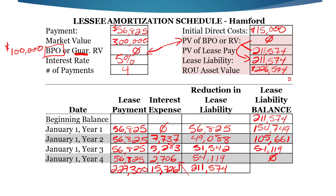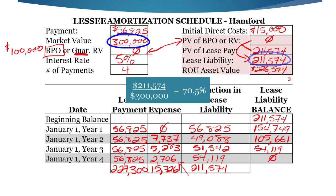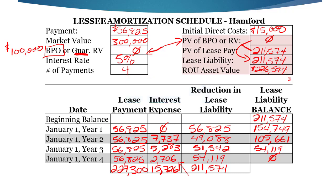Before we jump into journal entries, we need to determine: is this a finance or an operating lease? The way we do that is we compare this $211,574 to the $300,000. We see that we're only paying about 70% of the fair market value. There is no incentive to buy this asset at the end, so that doesn't make it a financing lease.